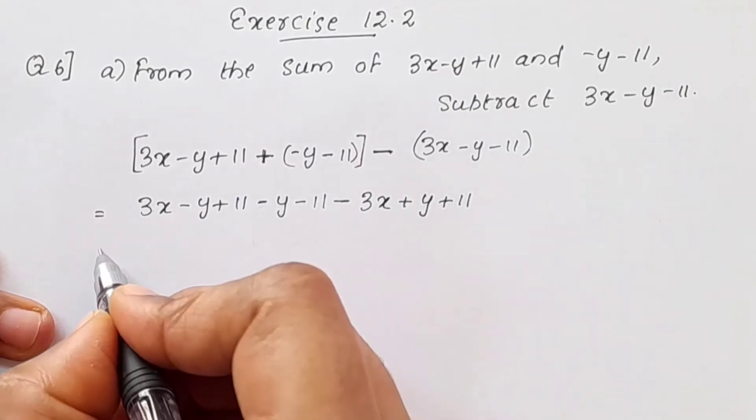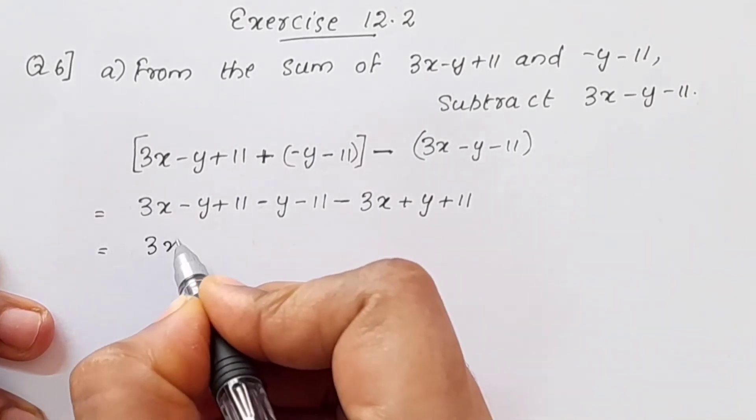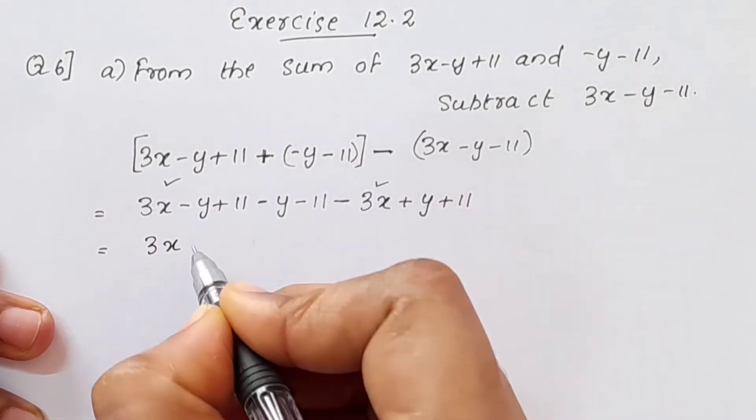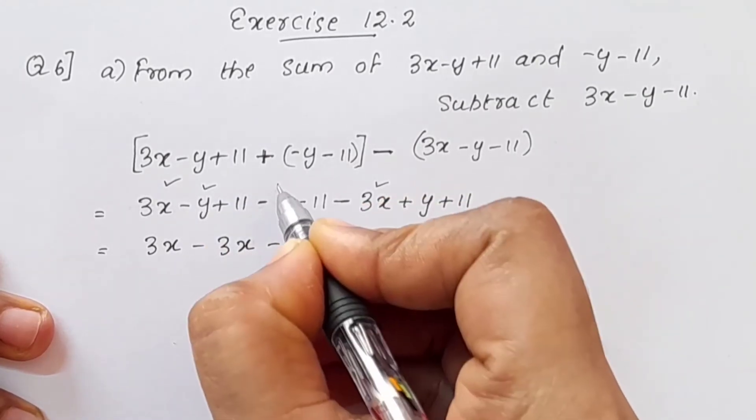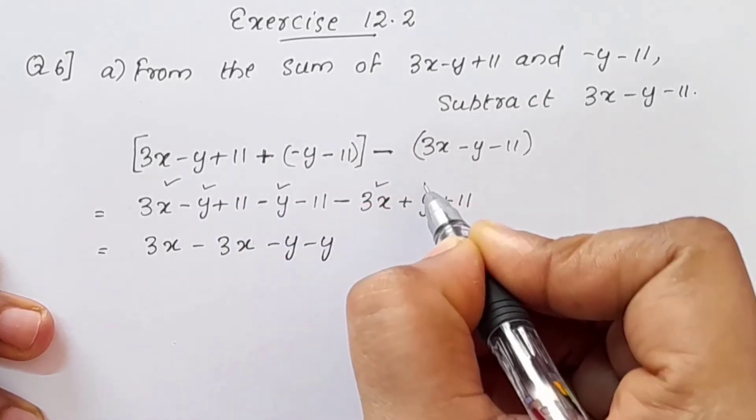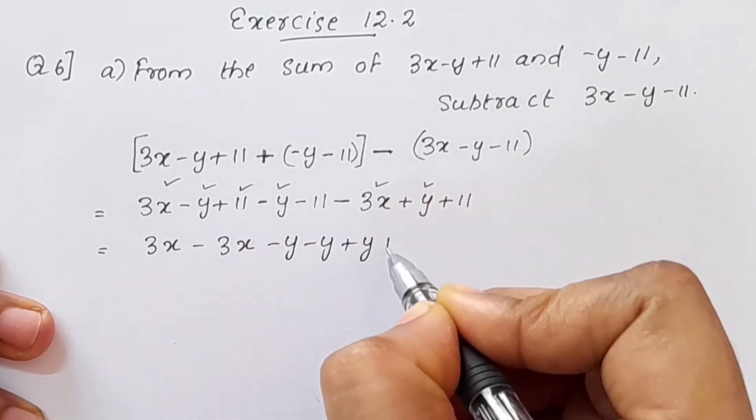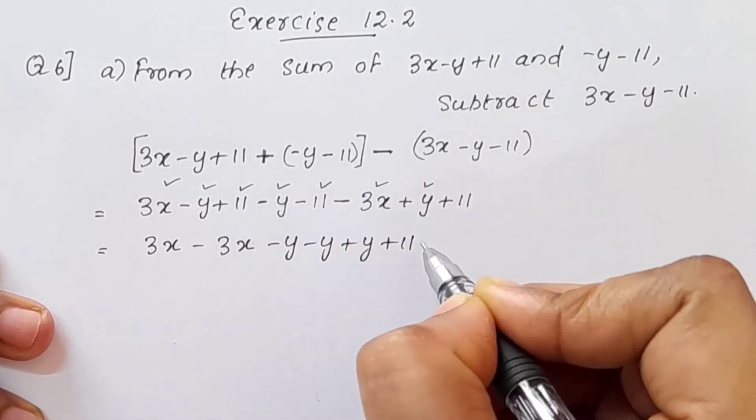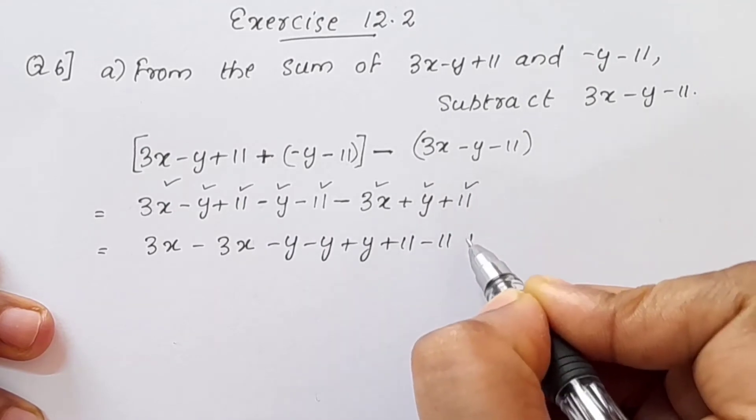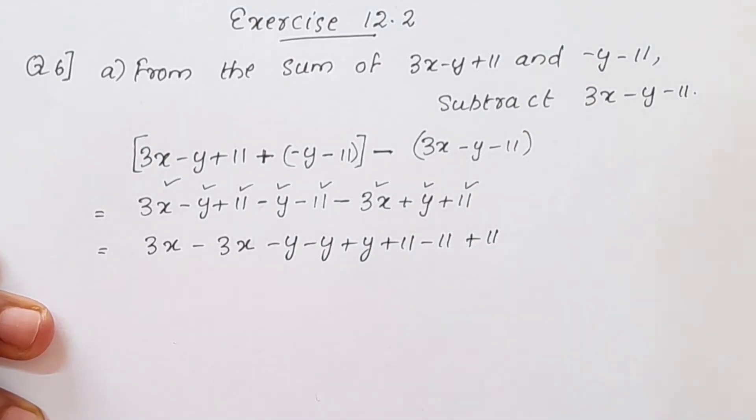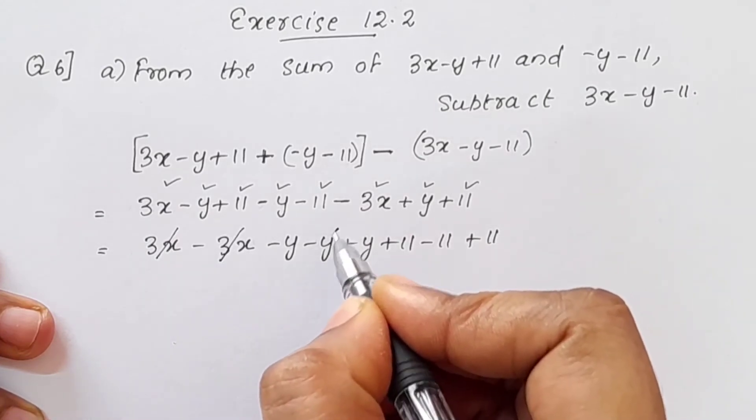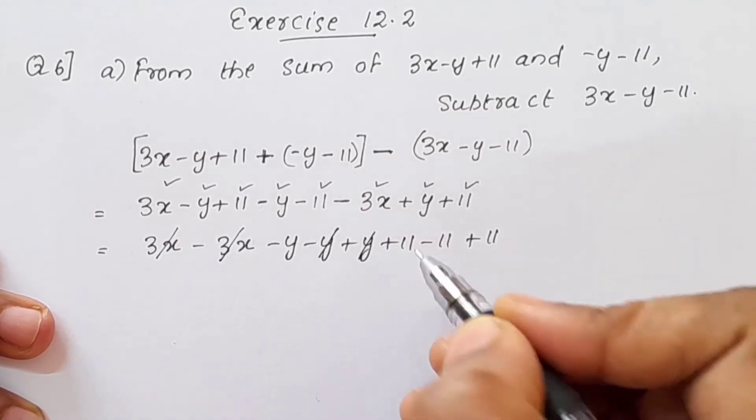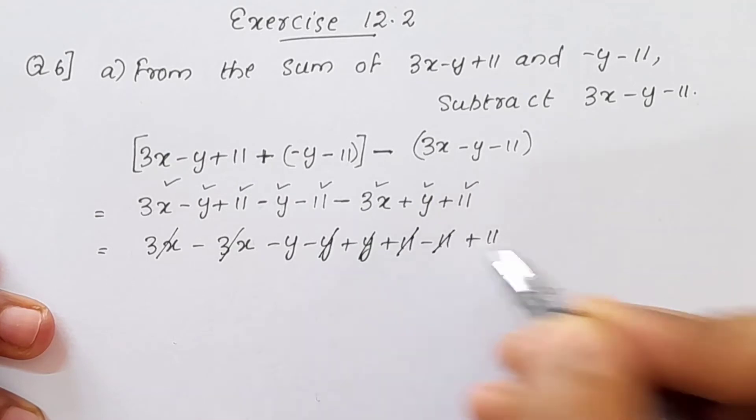We will rearrange: 3x minus 3x minus y plus y plus 11 minus 11 plus 11. 3x minus 3x is 0, minus y plus y, 11 minus 11 is 0.